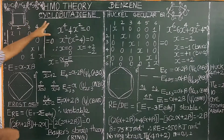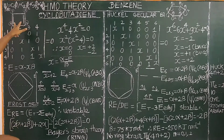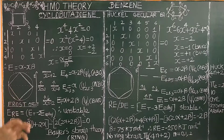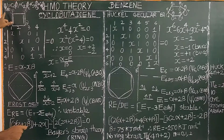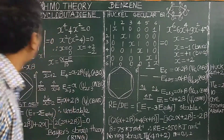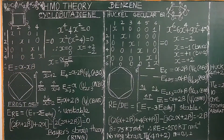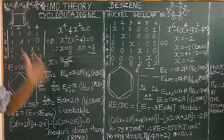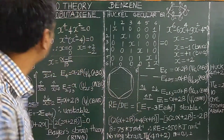For example, cyclobutadiene. The structure of cyclobutadiene is shown here. There are 4 carbon atoms. Each carbon atom has one unhybridized 2pz orbital with one unpaired electron. Therefore, the molecular orbital is constructed from the linear combination of atomic orbitals p1, p2, p3, p4, where c1, c2, c3 are the atomic orbital coefficients.